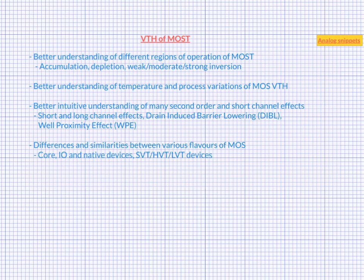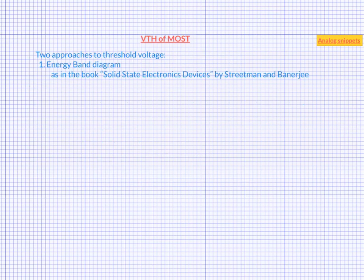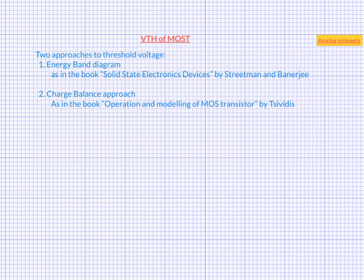You may remember from your device physics class that threshold voltage has a very complicated mathematical derivation. In this video we will leave out the complicated mathematical part and focus on more intuitive understanding. There are two popular approaches to understand threshold voltage. The first approach takes the energy band diagram route. The second approach uses charge balance. Both approaches add different dimensions to the understanding of threshold voltage. In this video we will start with the charge balance approach and use energy band diagram whenever that makes better intuitive sense.